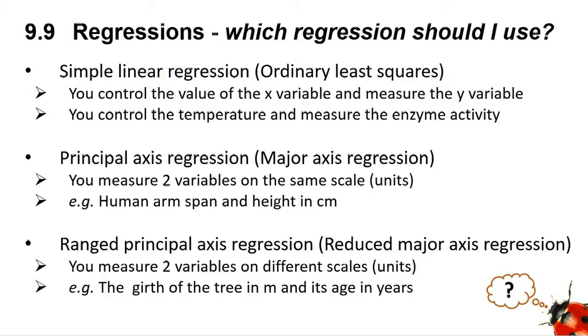However, if the two variables are on different scales, such as measuring the girth of a tree in metres and its age in years, then you need to use a ranged principal axis regression, sometimes called a reduced major axis regression.